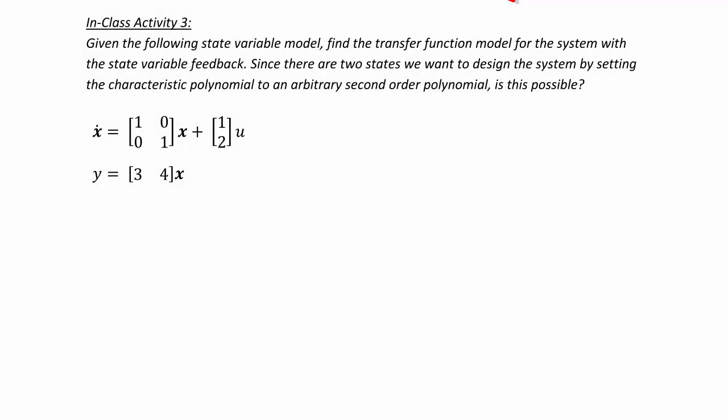Now let's start the final activity for today's lecture. Given the following state variable model, find the transfer function model for the system with state variable feedback. Since there are two states, we want to design the system by setting the characteristic polynomial to an arbitrary second-order polynomial. Is this possible?